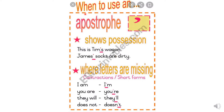Now I am going to tell you when to use an apostrophe. Firstly, we use apostrophe to show possession. Possession means to have something. Like, this is Tim's wagon. Wagon means a heavy vehicle. It means that this wagon is of Tim — we are telling the possession. Tim's possession is wagon. James' socks are dirty. Whose socks are these? We are telling James' possession about the socks.